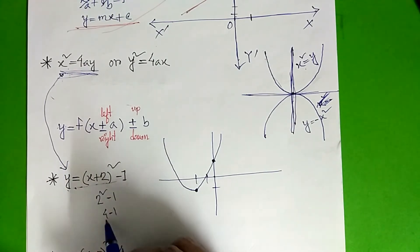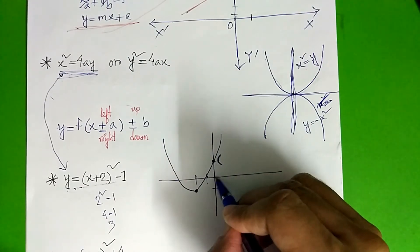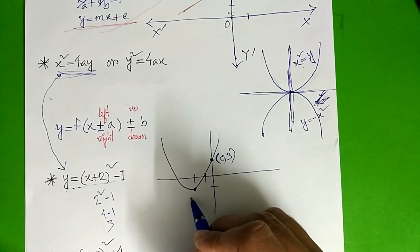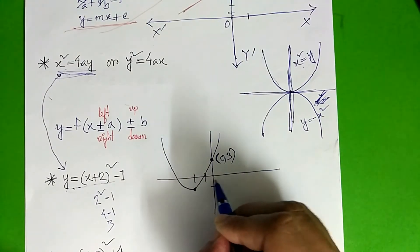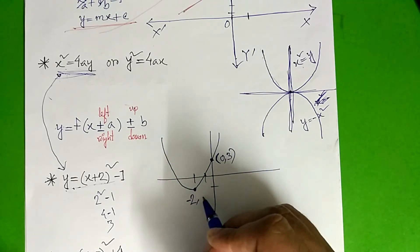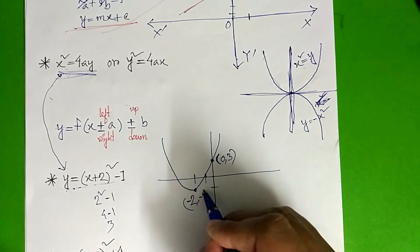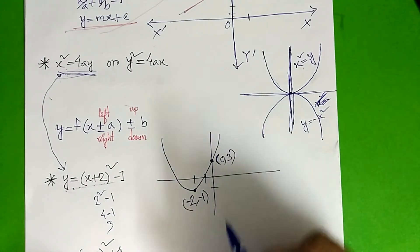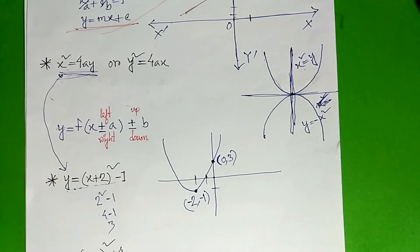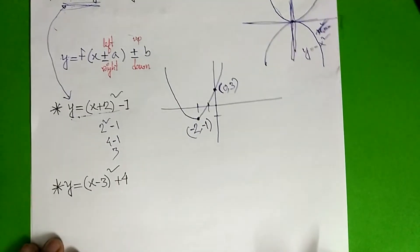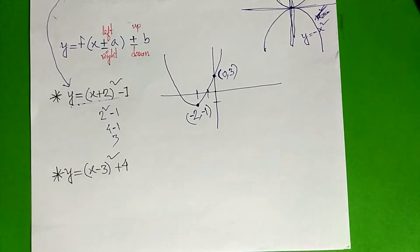X value 0: 2 squared minus 1 is 4 minus 1, so 3. So we have point (0, 3). And we have minus 2: minus 2 minus 1 gives minus 1 point, so point (-2, -1). I look at the example and I am going to show it to be clear.